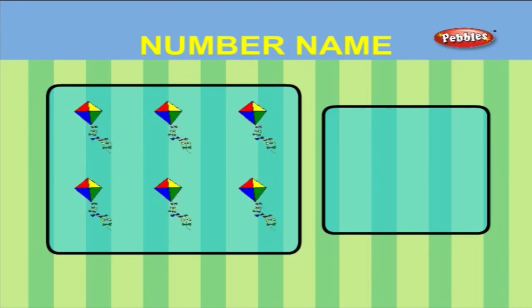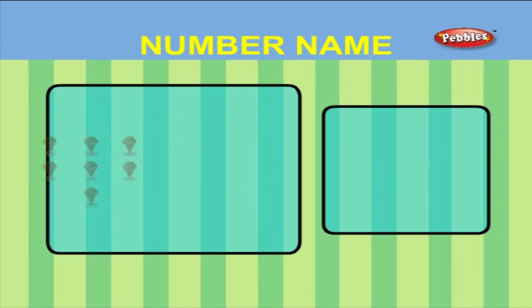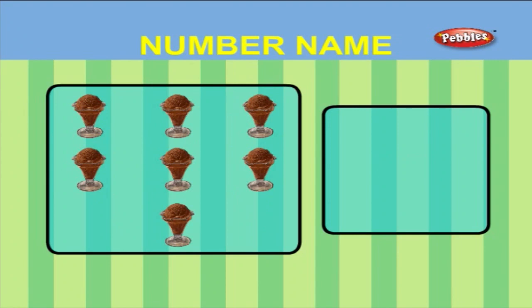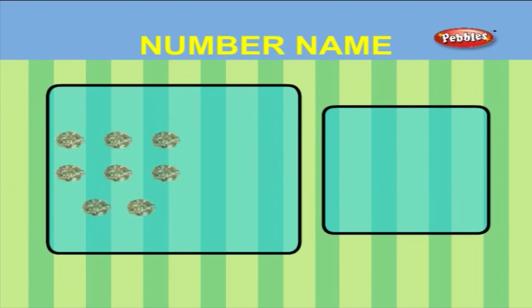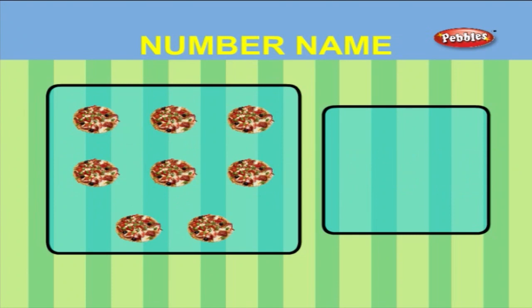There are six kites. S I X - Six. There are seven ice creams. S E V E N - Seven. There are eight pizzas. E I G H T - Eight.